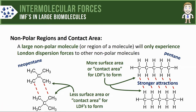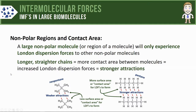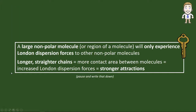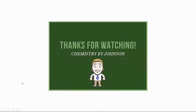All of this leads to the fact that pentane molecules will experience stronger attractions while the neopentanes will experience weaker ones. We can summarize that by saying: longer, straighter chains means more contact area between molecules, which increases the London dispersion forces and increases the strength of the attractions. That's our final key idea for the video, and that also concludes this video on intermolecular forces in large biomolecules. Thanks a lot for watching.